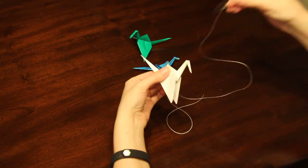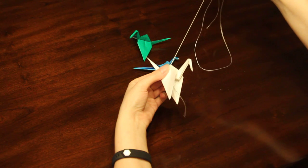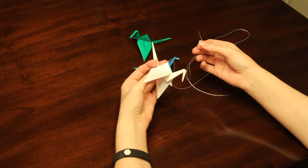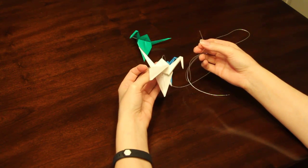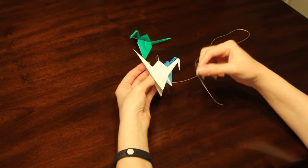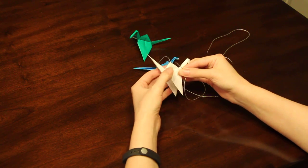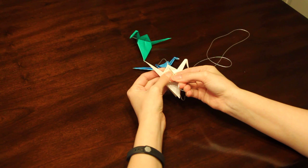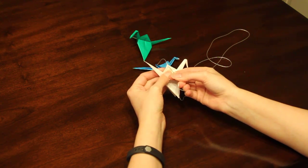Pull it through until the end of the thread is at the bottom of the crane. Don't pull all the way through, or you'll have to thread it again. Once you do that, then you're going to poke a hole at the top of the crane, probably about a quarter of an inch down.